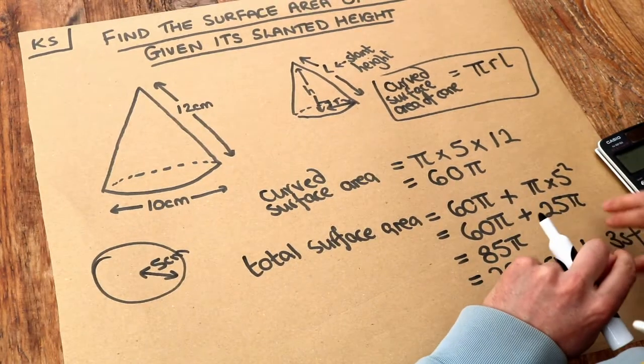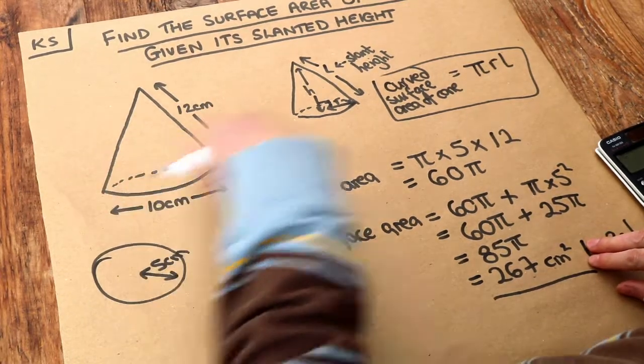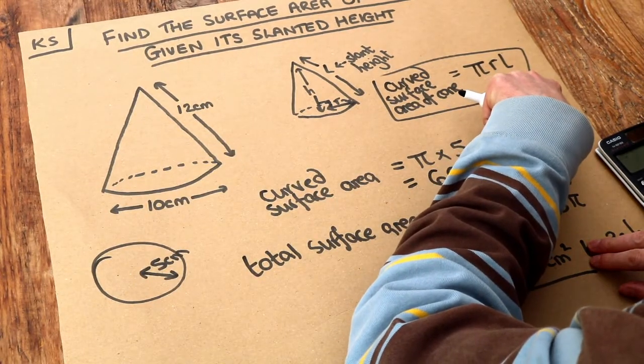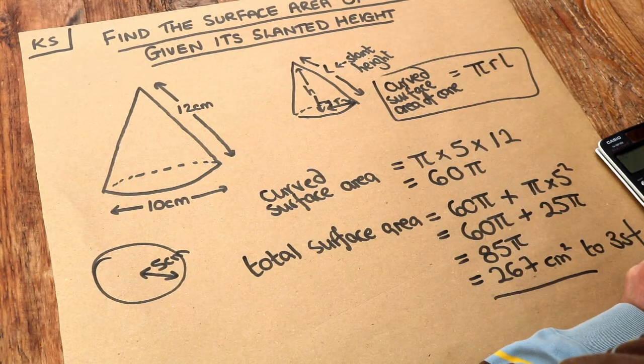Remember, for total surface area, calculate the curved surface area using π × r × l, where l is the slant height, plus the area of the bottom circle.